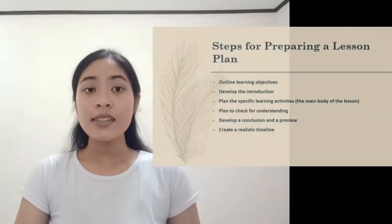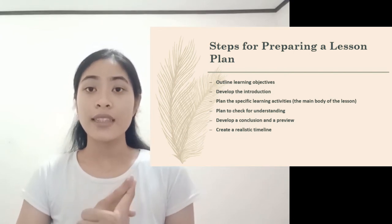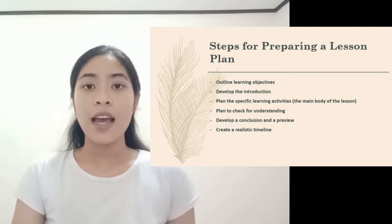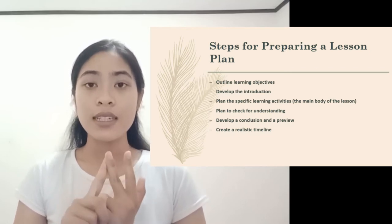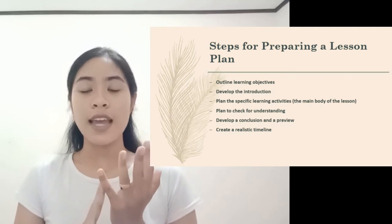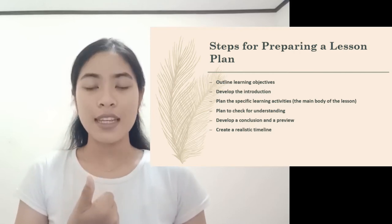The next topic is steps for preparing a lesson plan. There are six steps: first, outline the learning objectives; second, develop the introduction; third, plan the specific learning activities or the main body of the lesson; fourth, plan to check for understanding; fifth, develop a conclusion and preview; and last, create a realistic timeline.